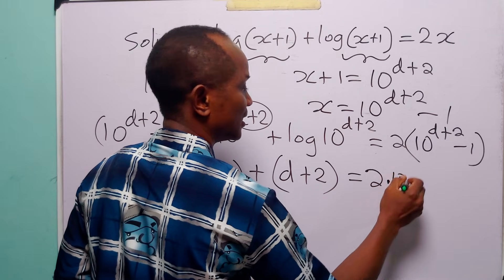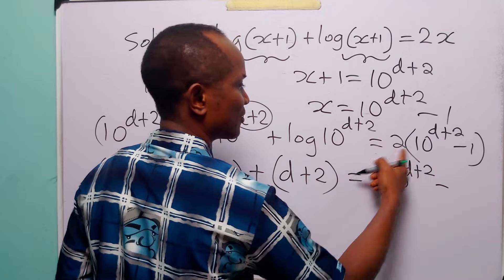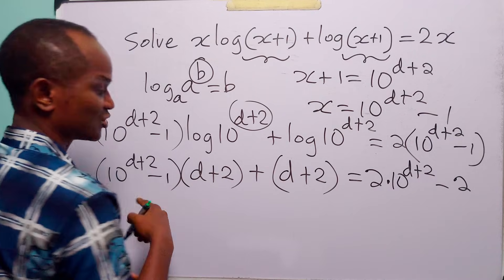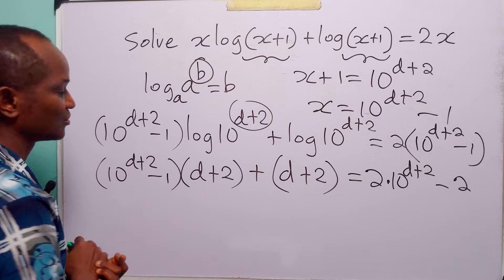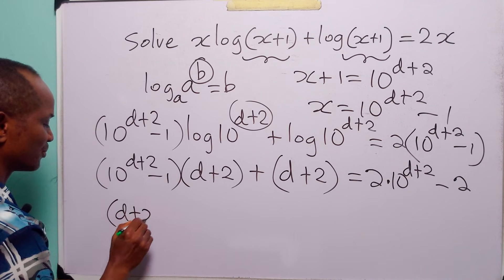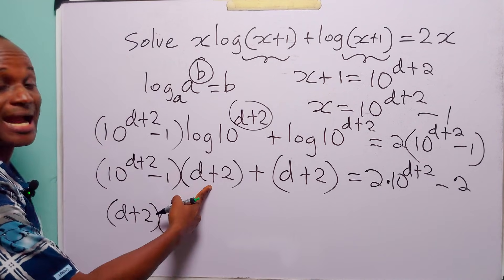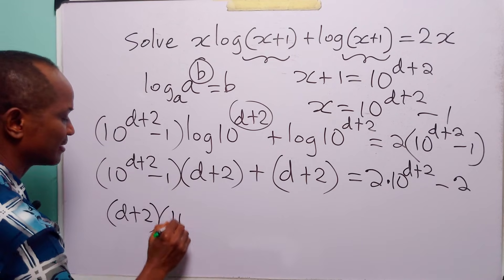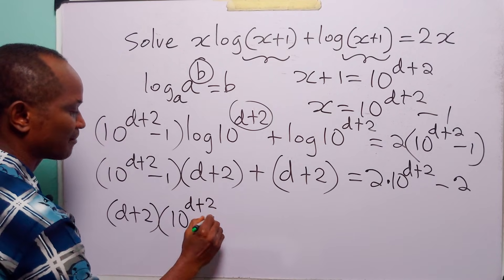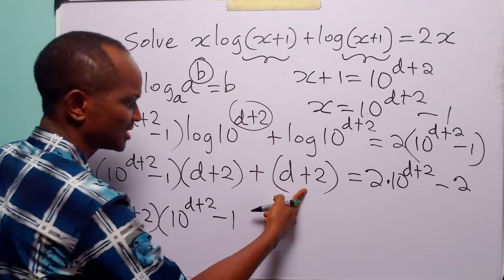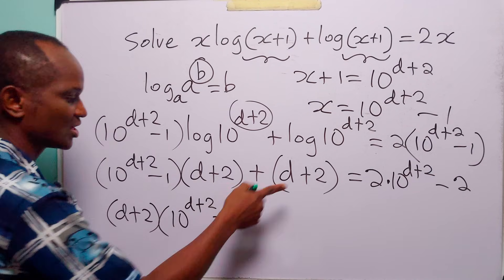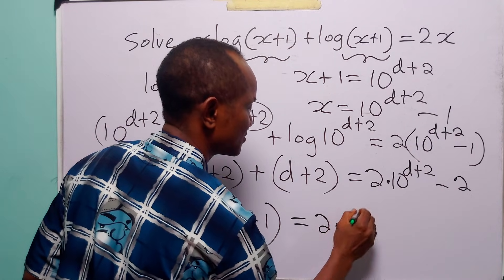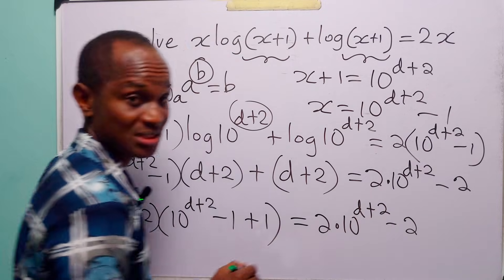When you look at the left-hand side, you can see a common factor which is d plus 2. So we factor that out: d plus 2 times the quantity 10 to the power d plus 2 minus 1 plus 1. This is equal to 2 times 10 to the power d plus 2 minus 2. Minus 1 plus 1 gives us 0, so the bracket simplifies nicely.